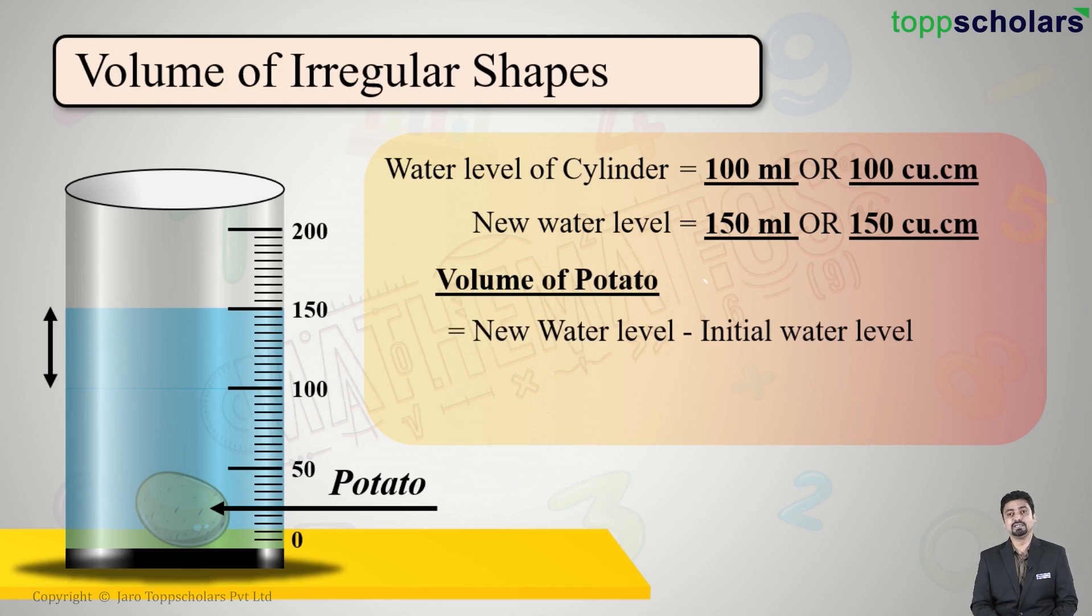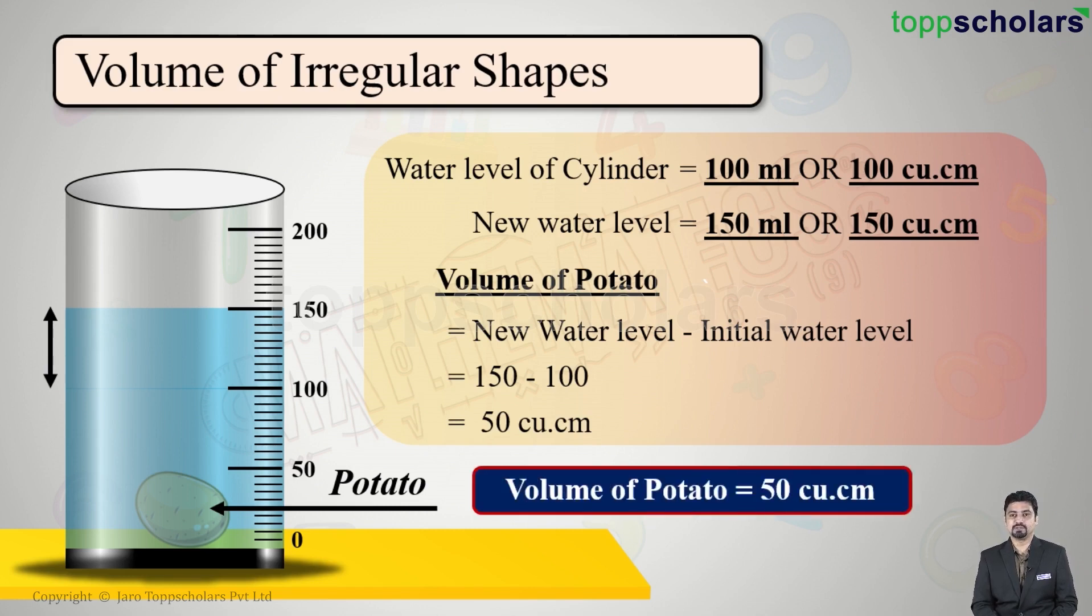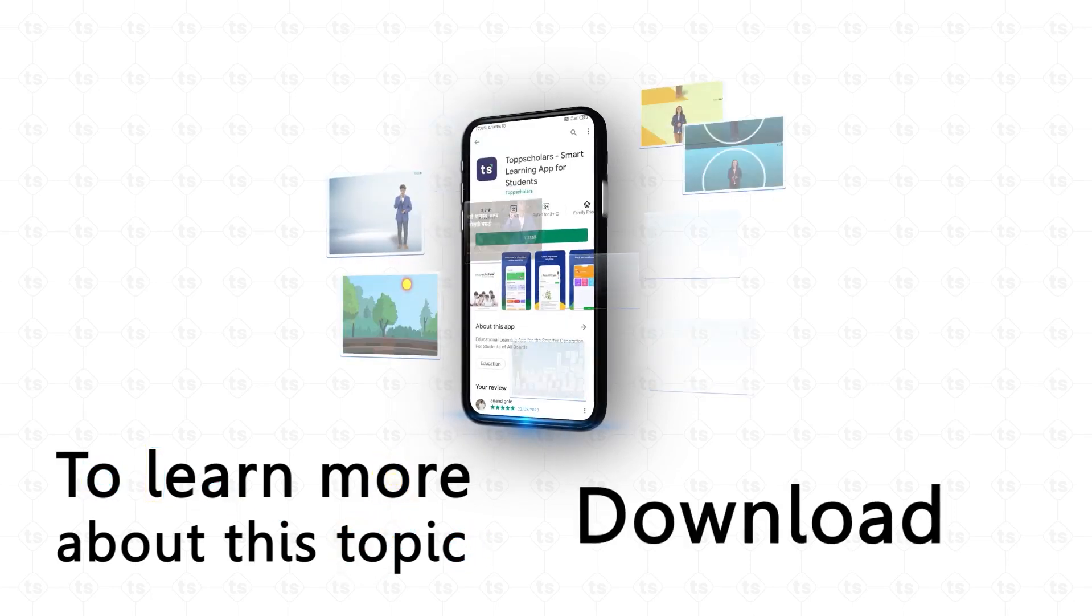So what will be the volume of the potato? The difference, that is the new water level minus initial water level. That is 150 minus 100, which gives me 50. This time I will say cubic centimeters. 50 cubic centimeters is the volume of the potato.